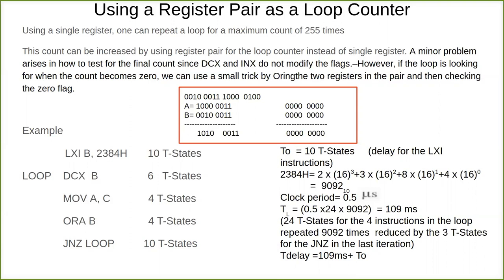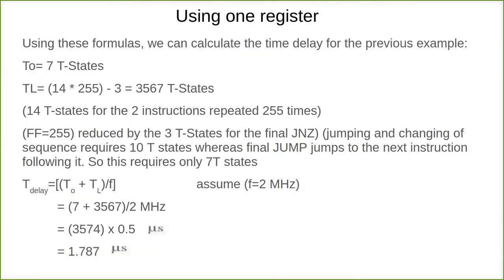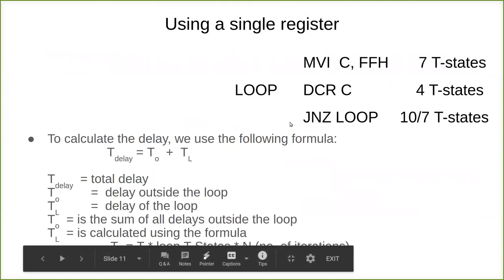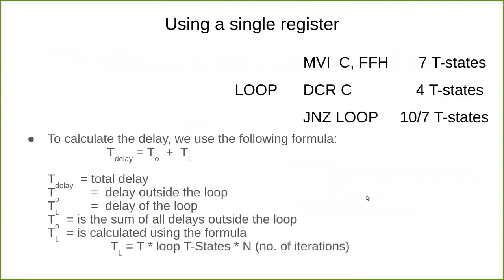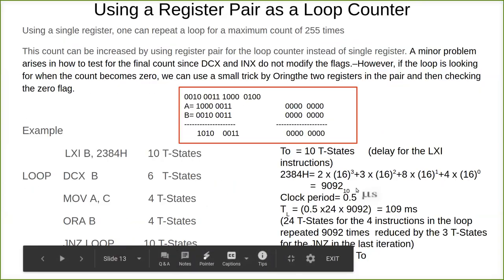The zero bit will be set. When it becomes 0, the zero bit will be set. So depending upon that, what we have done is jump on zero. We check that jump on zero or when it becomes 0, it comes out. That is what we have seen in a single register.